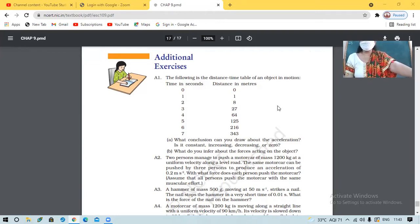It is going up to 343 starting from zero, so you can take a cube. If you notice the pattern, the pattern is 1 cube, 2 cube, 3 cube, 4 cube, 5 cube, 6 cube, and 7 cube. Acceleration is not decreasing, distance is increasing, so velocity will also be increasing and acceleration will also be increasing.